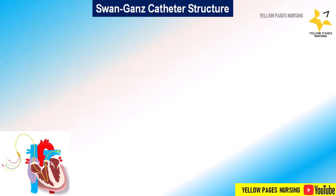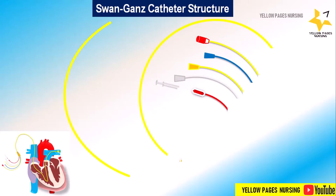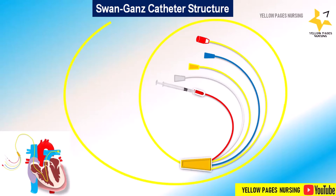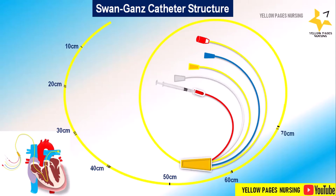Now comes the structure of the Swan-Ganz catheter. The typical pulmonary artery catheter is 100 to 110 centimeters long, radio-opaque polyvinyl chloride catheter, with either three or four lumens and seven to eight French in diameter. Thin black distance markers appear at 10-centimeter intervals from the tip to the hub: one thin line is 10 cm, two thin lines is 20 cm, three thin lines is 30 cm, and so on. Thick black distance markings indicate 50 centimeters, and a thick black line plus one thin line indicates 60 centimeters.